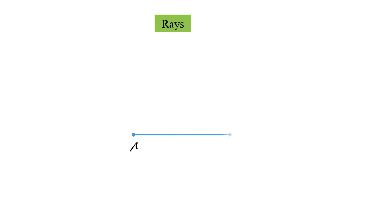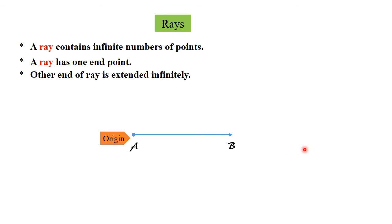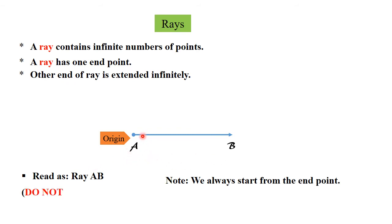Another geometric figure is ray. A ray is a part of a line that starts at one end and goes forward continuously in the same direction. The starting point of a ray is called its origin, and an arrow head is drawn to show that the ray is infinite in the direction of B. A ray contains an infinite number of points, has only one end point, and the other end is extended infinitely. It can be read as ray AB — use the origin first and then write the other point.